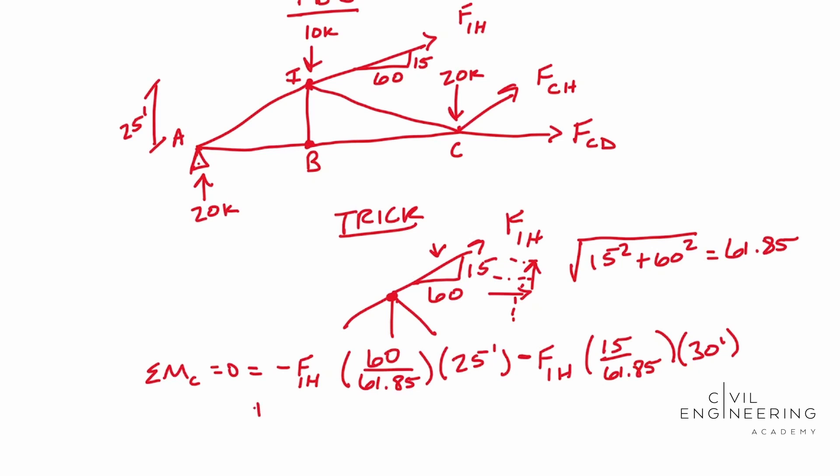Now we are going to add 10 kips times 30 feet and we're going to subtract 20 kips times 60 feet.